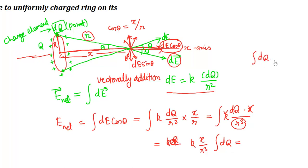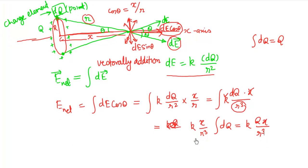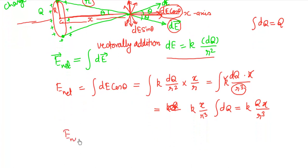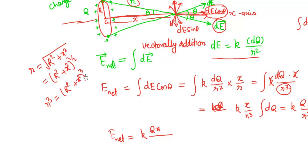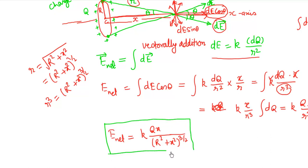The integration of dQ means the sum of all charges on the ring, which comes out to be the total charge Q. So net field equals K·Q·x upon R³. Now, R equals the square root of (R² + x²), which can be written as (R² + x²)^(1/2). Therefore R³ equals (R² + x²)^(3/2). So the net field can be written as K·Q·x upon (R² + x²)^(3/2). This is the expression for the net field on the axis of a charged ring.